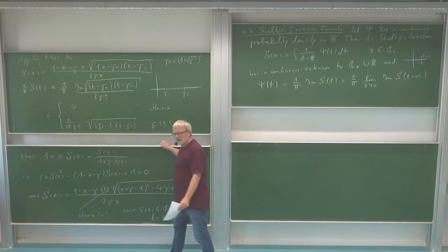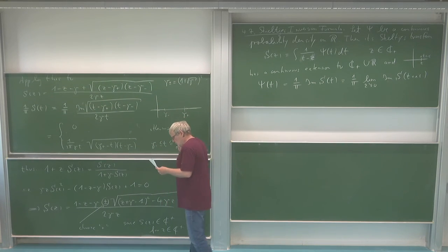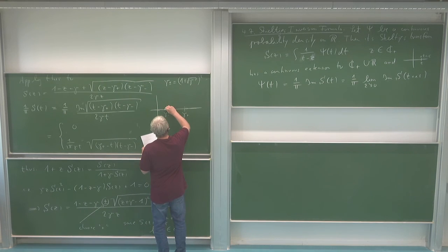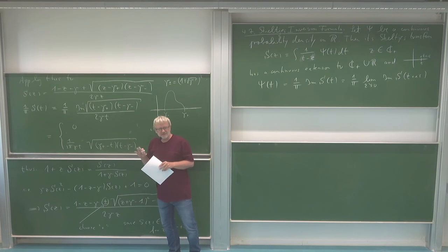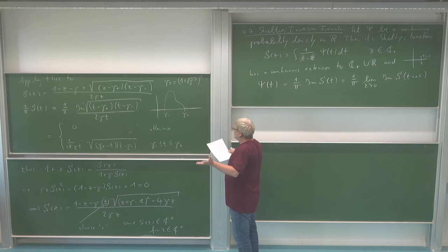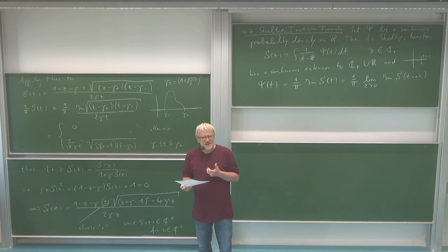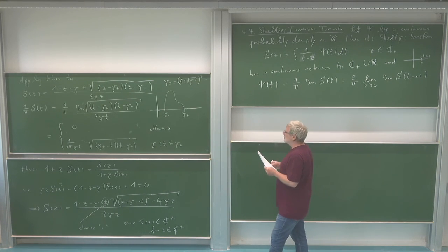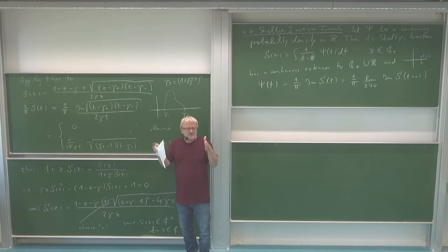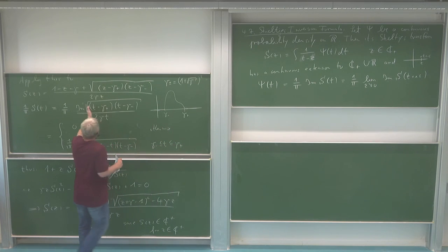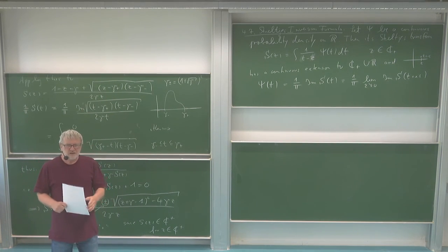Therefore the density is zero outside [gamma_-, gamma_+], and for t in (gamma_-, gamma_+) it is: psi(t) = 1/(2·pi·gamma·t) · sqrt((gamma_+ - t)(t - gamma_-)). This is exactly the Marchenko-Pastur formula. You can see how we really get it from our concrete formula for the Stieltjes transform, and in particular why the density has compact support — because taking the imaginary part of a square root gives zero outside the interval where the argument is negative.